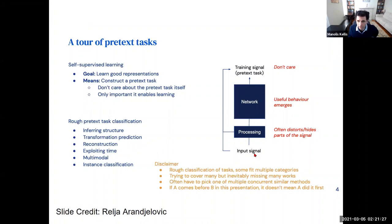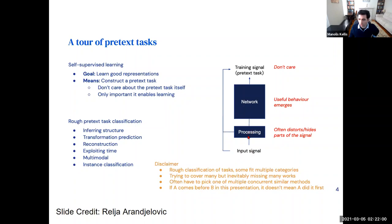The goal of pretext tasks: you have some input signal, you process that signal through your network to learn representations, and you use your input signal to create a training signal — some kind of pretext task that you really don't care about. You process the image — remove a patch, make it black and white, or down-sample it — and that input signal goes into training. What you care about is the representation learning that happens in the middle.